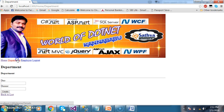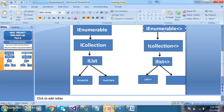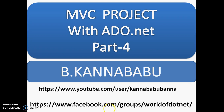In admin layout .cshtml, the link text is 'Department' and the action method name is 'Details', the controller name is 'Home'. Whenever admin clicks on Create New, the Department page is invoked. If you want to add a new department you can add it. In the next video we will discuss how to perform delete operations. For more updates, subscribe to my YouTube channel and Facebook group. Thank you, have a nice day.